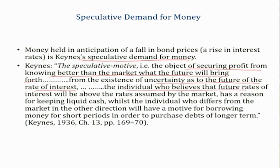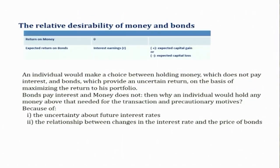According to Keynes, the individual who believes that future rates of interest will be above the rates assumed by the market has a reason for keeping liquid cash — that is, demanding money. Whilst the individual who differs from the market in the other direction will have a motive for borrowing money for short periods in order to purchase long-term debt. In our model there are only two assets: money and bonds. Money does not pay any rate of interest, so its return is zero. Bonds pay interest earnings.